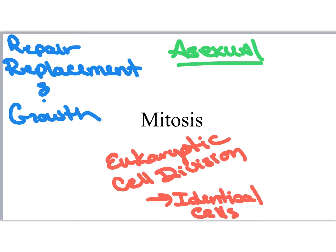Hi everyone and welcome back. We've been talking about cell division and in this case we're going to talk about a specific type of cell division. Of course it couldn't just be simple — there couldn't just be one way to do cell division. This type of cell division is called mitosis, and it's a little more complicated because it's used by some complicated cells: the eukaryotes.